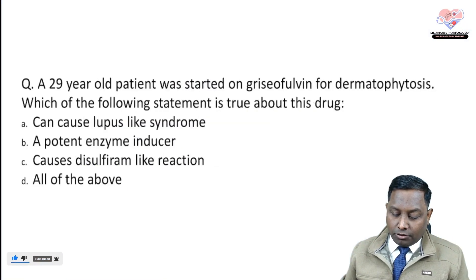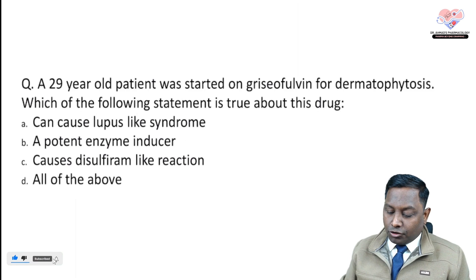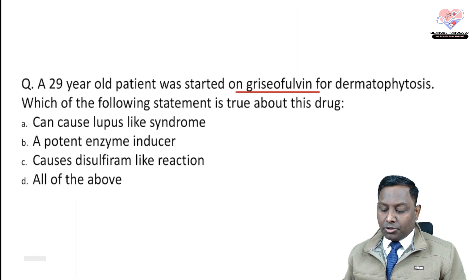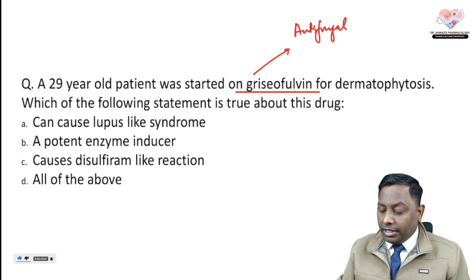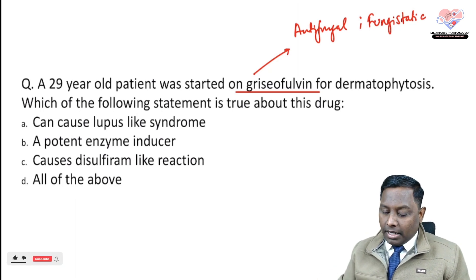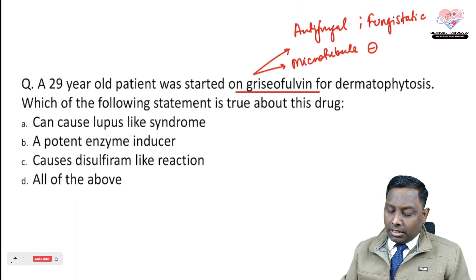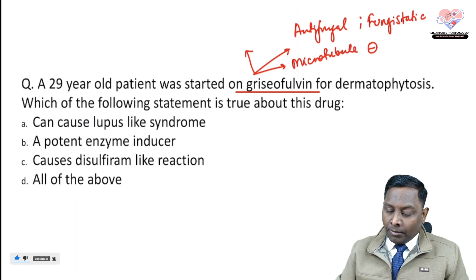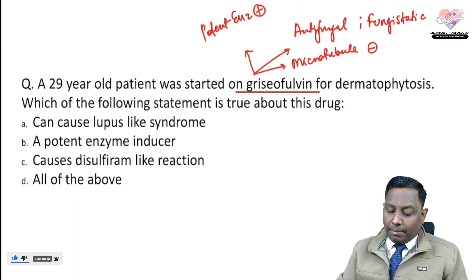The next question is about a 29-year-old woman started on griseofulvin for dermatophytosis. Griseofulvin is an antifungal drug — fungistatic, though examiners sometimes say fungicidal to confuse you. It is a microtubule inhibitor that inhibits fungal cell division. An important pharmacokinetic property: griseofulvin is a very potent enzyme inducer.